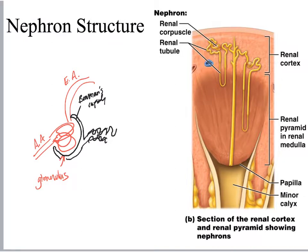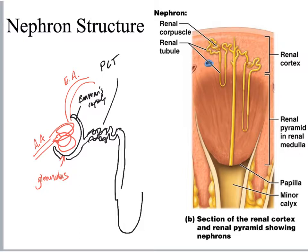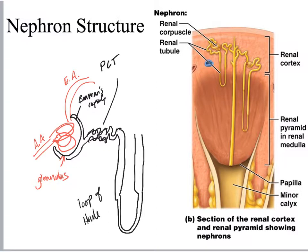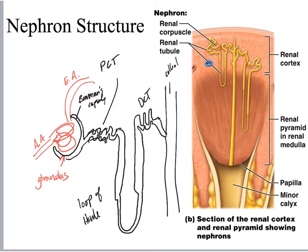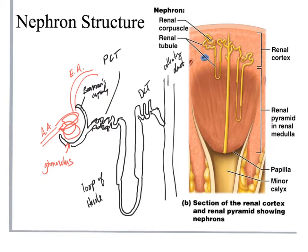From Bowman's capsule, the fluid enters the next part of the nephron. The entire structure goes from Bowman's capsule through the proximal convoluted tubule, the loop of Henle, the distal convoluted tubule, and finally into a collecting duct. That is the basic structure of the nephron.